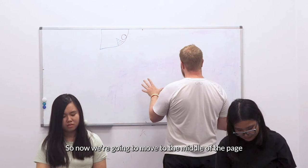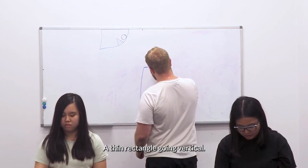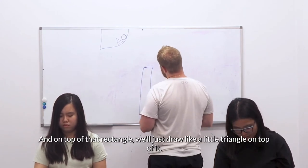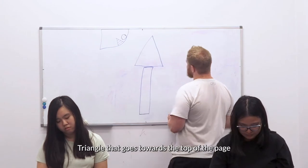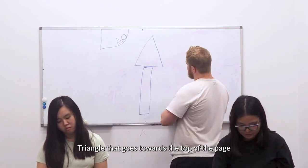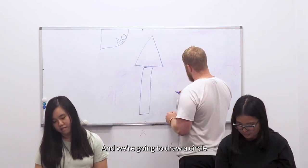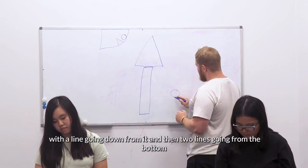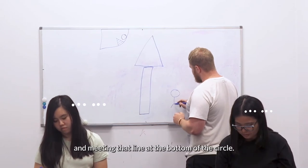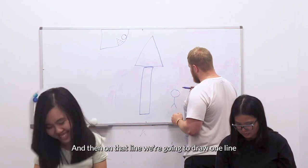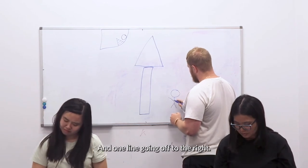So now we're going to move to the middle of the page and draw a rectangle going vertical — a thin rectangle going vertical. And on top of that rectangle, we'll draw a little triangle on top of it, a triangle that goes towards the top of the page. To the right of that, we're going back down to the bottom of the page and draw a circle with a line going down from it. And then two lines going from the bottom and meeting that line at the bottom of the circle. And then on that line, we're going to draw one line going off to the left — only a short one — and one line going off to the right.